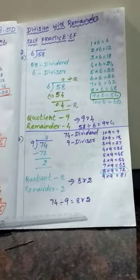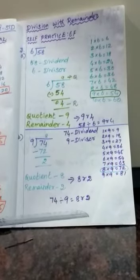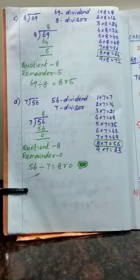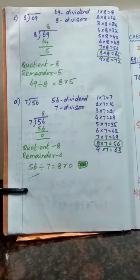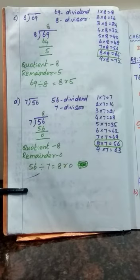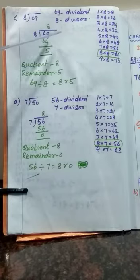This is the method of doing long division. I hope you all understand. Next see the next sum: 69 divided by 8. Which one is the dividend? 69 is the dividend and 8 is the divisor. You have to compare the first digit and the divisor. First digit is 6, divisor is 8. 6 is less than 8. So you have to take 2 digits. Taking 2 digits gives you 69.